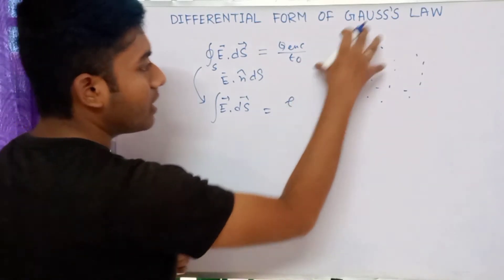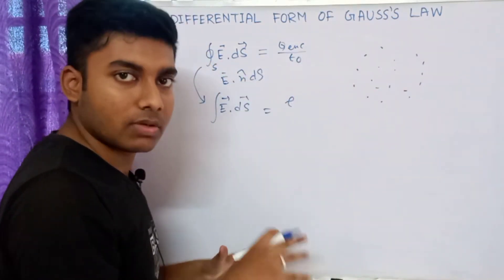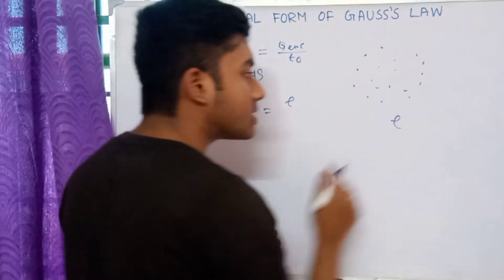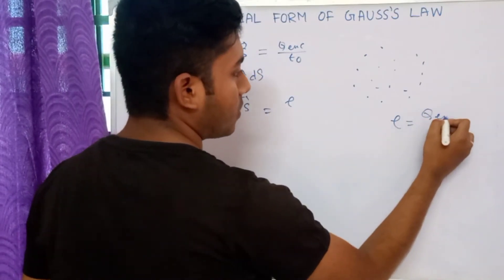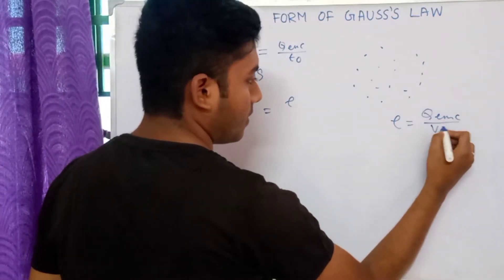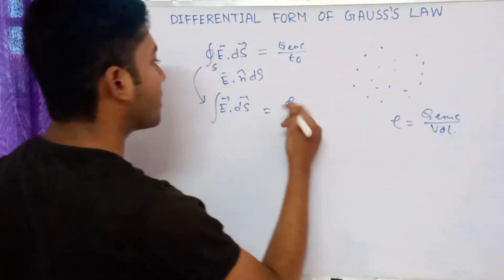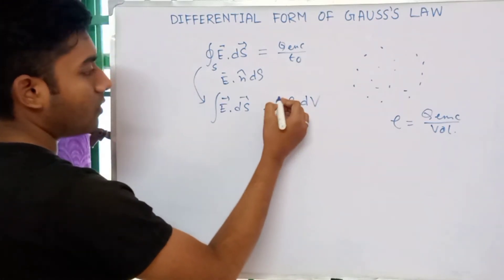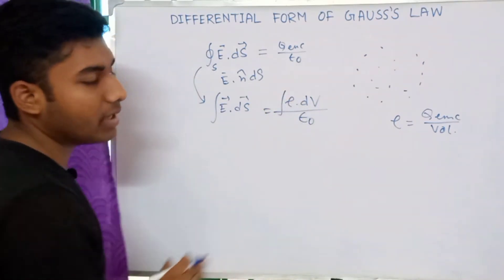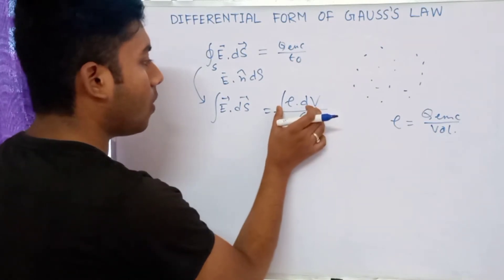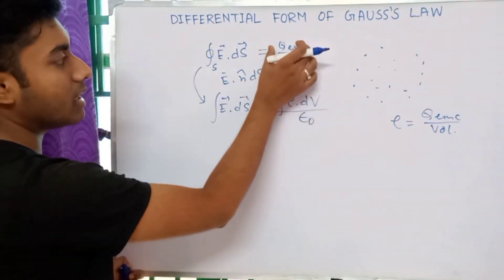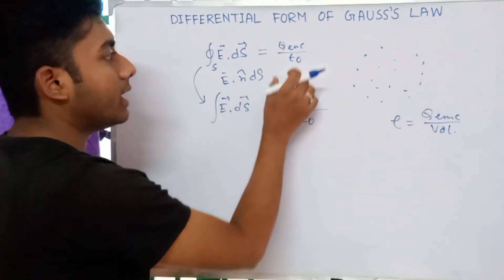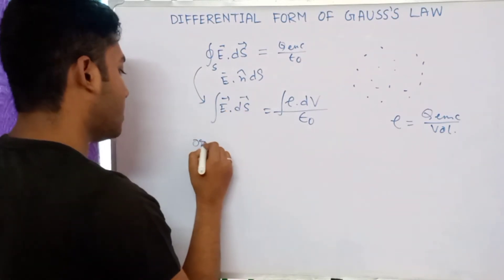Assuming a uniform distribution, where rho is the volume charge density — that is Q enclosed divided by volume — we integrate rho into dV over the total volume to get the total Q enclosed, divided by epsilon naught.